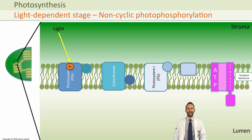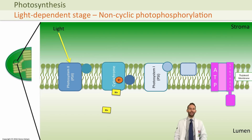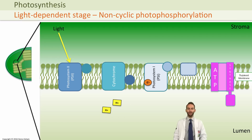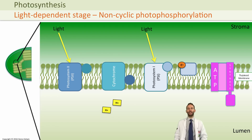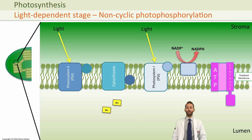That excited electron is passed down an electron transport chain, losing energy as it goes. This energy is used to pump hydrogen ions from the stroma into the lumen of the thylakoids. At photosystem one, another photon re-excites the electron back up to a higher energy state, and it gets passed along another electron transport chain until it combines with NADP+, an electron acceptor, which becomes reduced NADP — also known as NADPH — needed in the second part of photosynthesis.